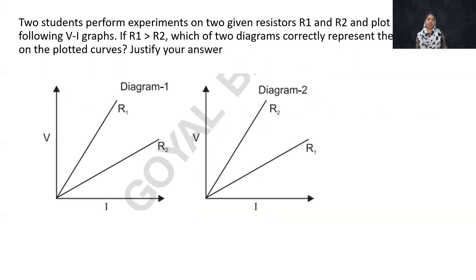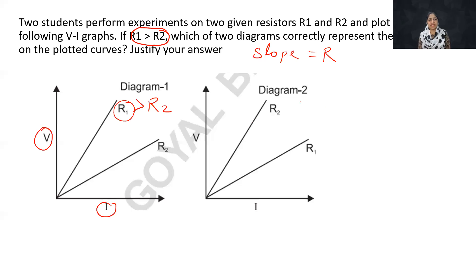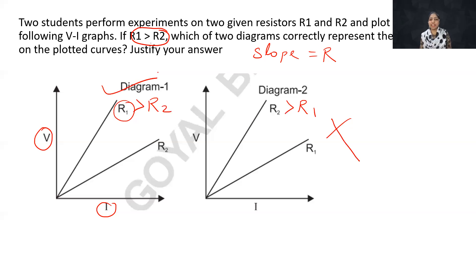So T1 will be greater than T2. Which of the two diagrams correctly represents the plotted curve? Justify your answer. Given R1 is greater than R2: slope of V-I graph equals resistance, and higher slope means higher resistance. In Diagram 1, R1 has a steeper slope than R2, so R1 > R2 — correct. In Diagram 2, it shows R2 > R1, which is wrong. So the correct answer is Diagram 1.